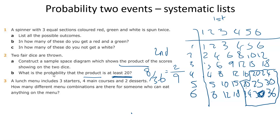OK, and the last example. A lunch menu includes three starters, four mains, and two desserts. How many different menu combinations are there for someone who can eat anything on the menu? Well, you could label these sort of A, B, C, and D, E, F, G, and H, and I. And then you could make a list. So A with B with H and A with B with I. And this is going to take too long. A better way is to think about this in permutations, I think.